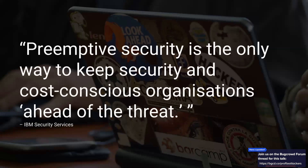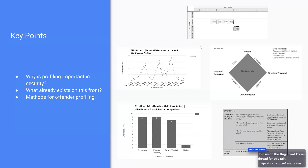Coming back to that quote, preemptive security is about doing something now — spending some money and time now — to help protect ourselves in the future. Offender profiling is a type of preemptive security. Today I want to break things down into three main areas: what offender profiling actually is, what already exists in white papers and research, and how we can use offender profiling in security operations.